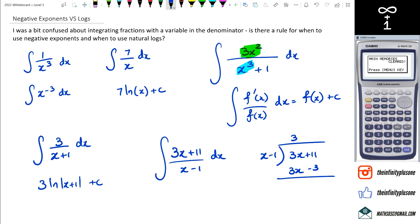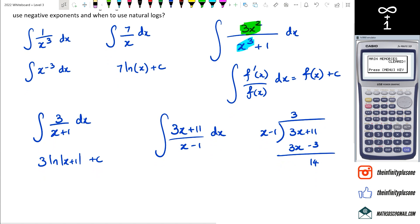Take away negative 3, sorry. So then this would end up being looking like this: 3 plus 14 over x minus 1 dx. So as you guys can see, I mean like it really depends on the question.